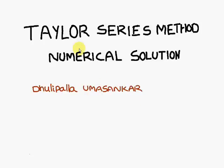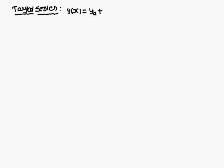Today we are going to discuss the Taylor series method for numerical solutions. The Taylor series formula states: y(x) = y₀ + (h/1!)·y₀' + (h²/2!)·y₀'' + (h³/3!)·y₀''' + ... and so on. This is the Taylor series formula.